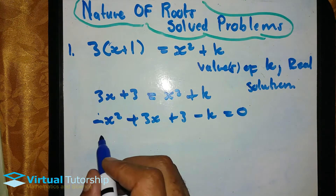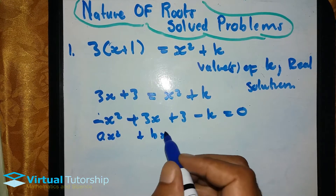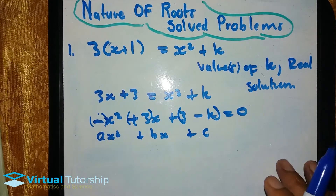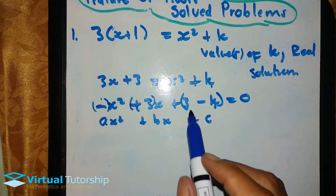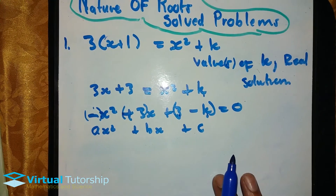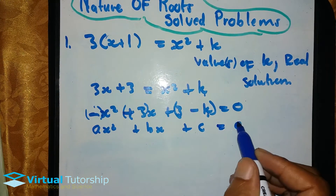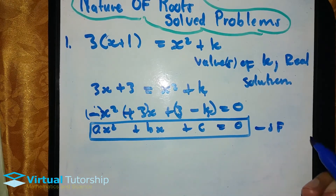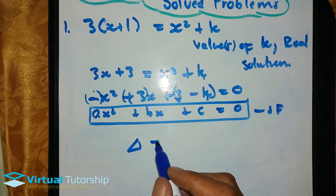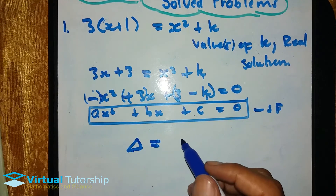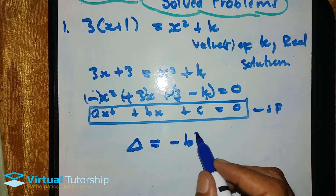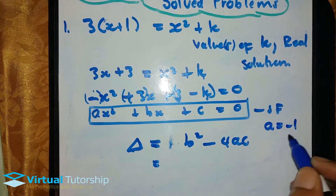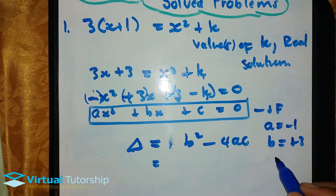The standard form is ax squared plus bx plus c. So this is my c value, this is my b value, and my a value. Remember we keep the constant on one side equal to zero. So the equation is now in standard form. For the nature of the roots, we need the delta value. Delta is b squared minus 4ac. So a is equal to negative 1, b is equal to positive 3, c is equal to 3 minus k.